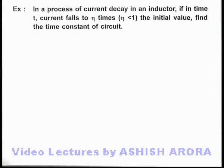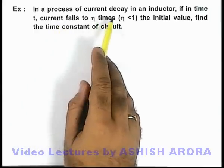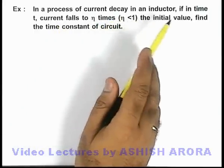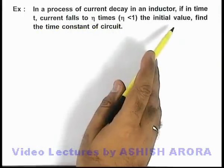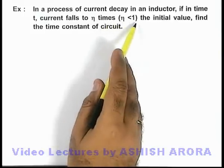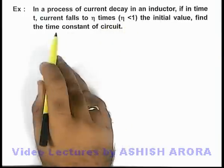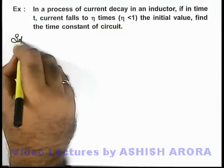In this example, we are given that in a process of current decay in an inductor, if in time t current falls to η times the initial value, where the fraction η is less than 1, we are required to find the time constant of the circuit.